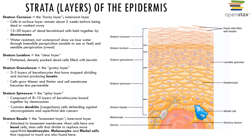The stratum granulosum, or granule layer, is a thin layer three to five cell layers thick in which the cells start to flatten out. This is a dying layer — the nuclei are disintegrating and keratin production begins. You can start to see the granules, hence its name, the stratum granulosum.